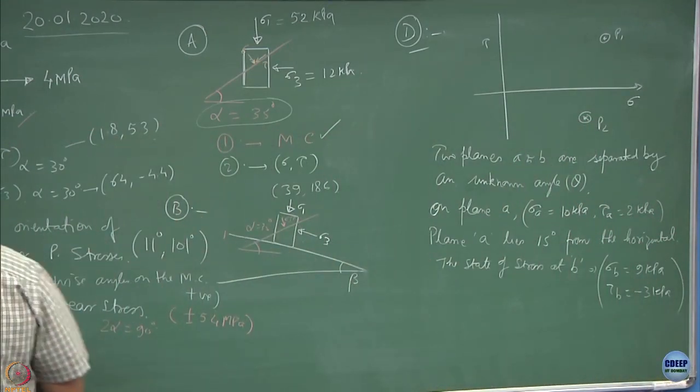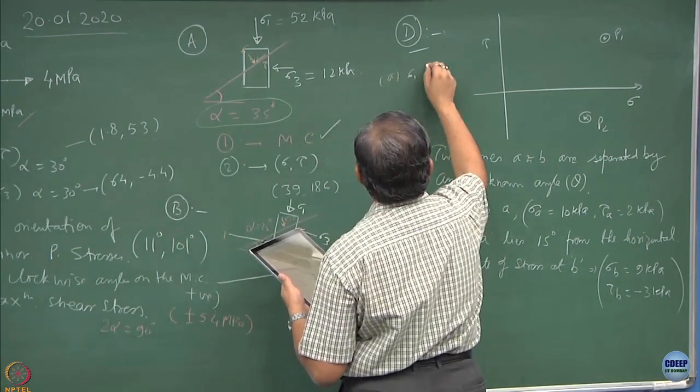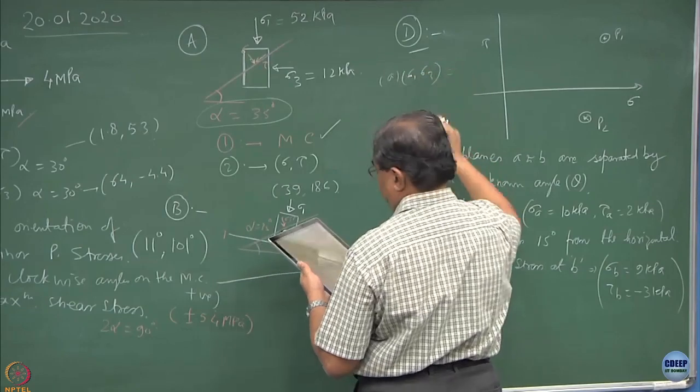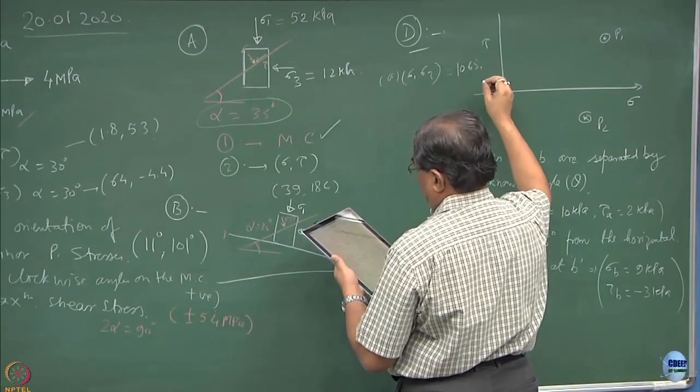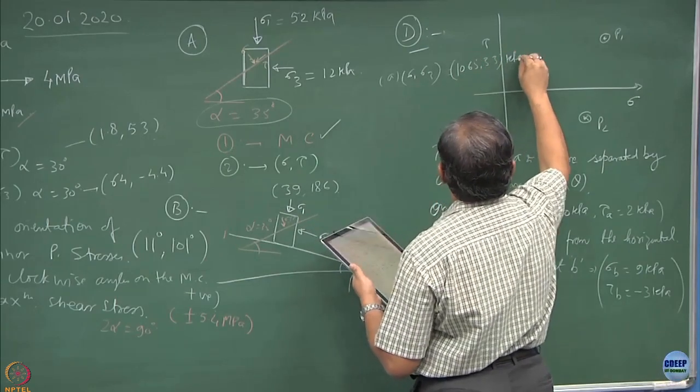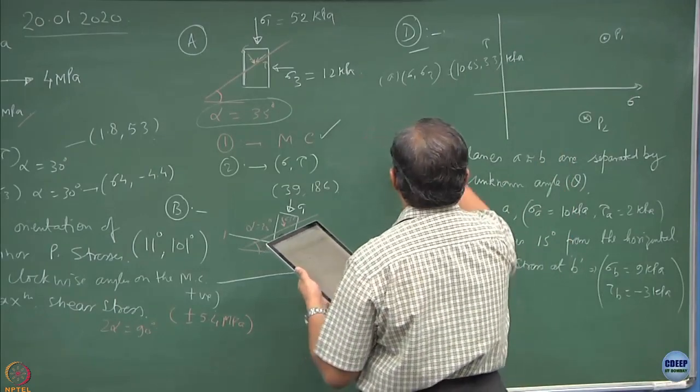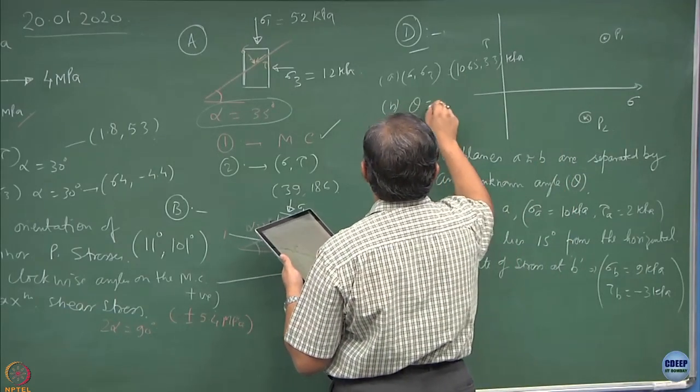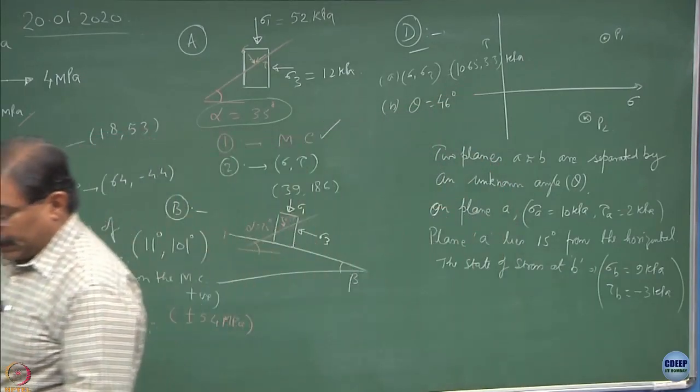The answers for this problem would be sigma 1, sigma 3 comes out to be 10.65 and 3.3 kPa. And the value of theta comes out to be 46 degrees. Try to solve this problem.